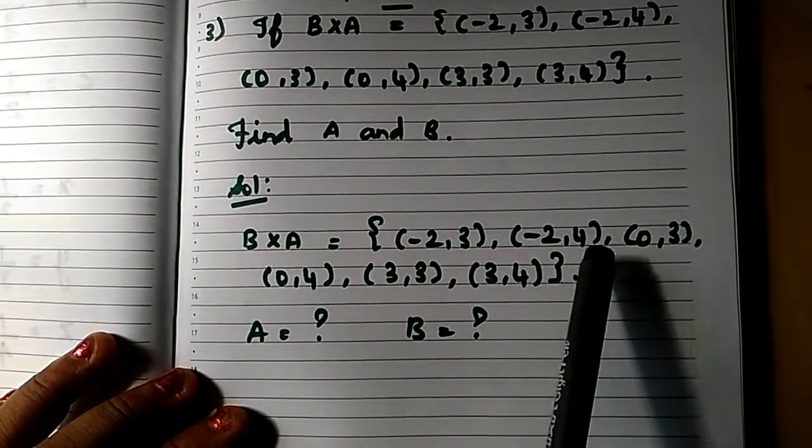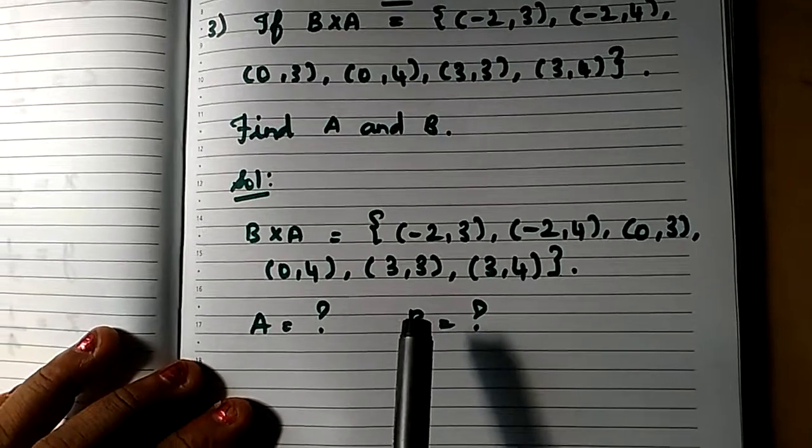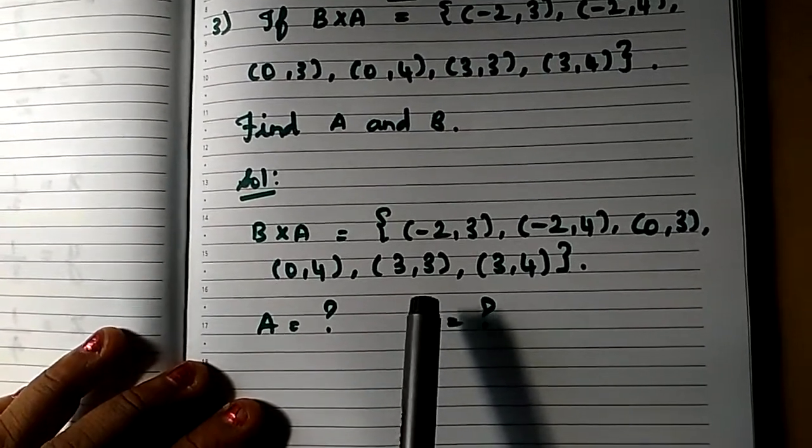Minus 2,3, minus 2,4, 0,3, 0,4, 3,3, 3,4. So finding set values is very easy children.